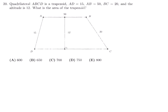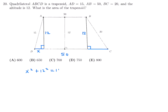Number 20: Trapezoid ABCD has AD=15, AB=50, BC=20, and altitude=12. Drawing perpendiculars down, and noting the base is also 50. For side AD: x² + 12² = 15², so x² = 225 − 144 = 81, giving x = 9.